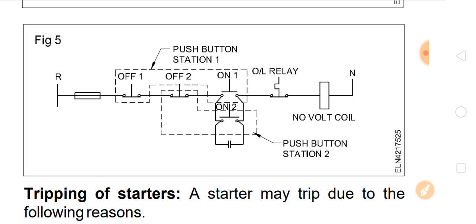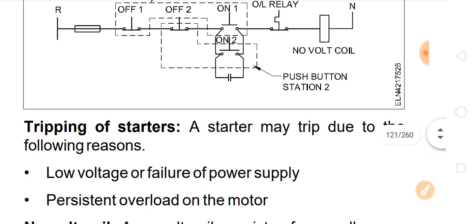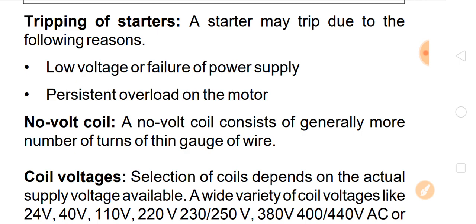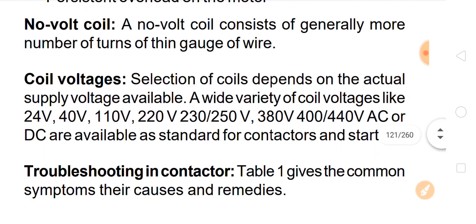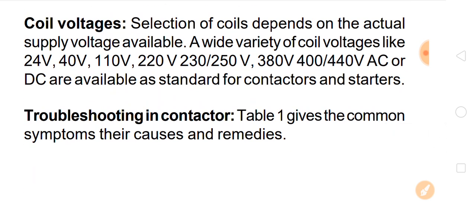Tripping of starters: a starter may trip due to the following reasons — low voltage, failure of power supply, or percentage overload on the motor. No-volt coil: a no-volt coil consists of generally a large number of turns of thin gauge wire. Coil voltage: selection of coil depends on the actual supply voltage available. A wide variety of coil voltages are available as standard for contactors and starters, including 24V, 40V, 110V, 220V, 230V, 250V, 380V, and 440V AC and DC.